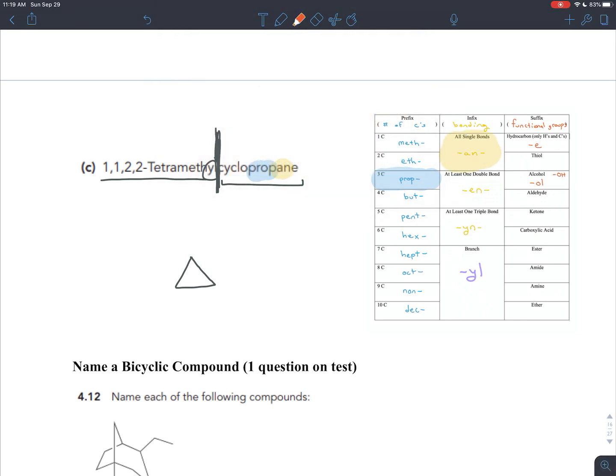Next, the infix is an, so all single bonds. So we're covered there. And the suffix is e. So we only have hydrogen and carbon. We're drawing the molecule, we could number it however we want. I'm going to number it clockwise.